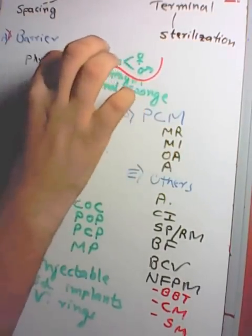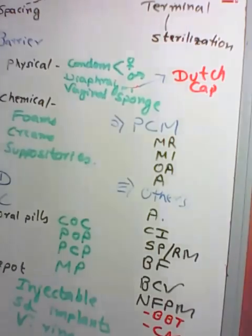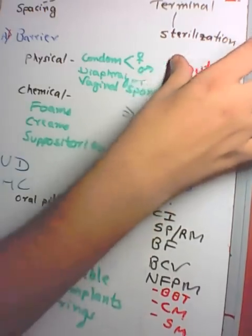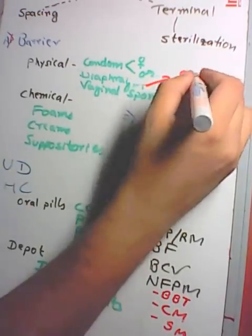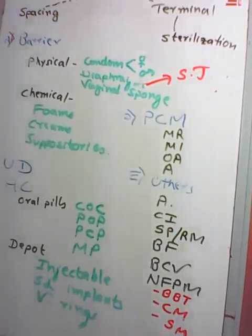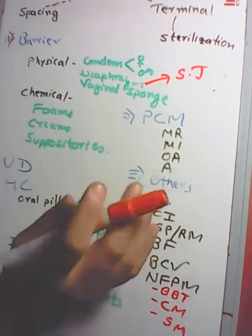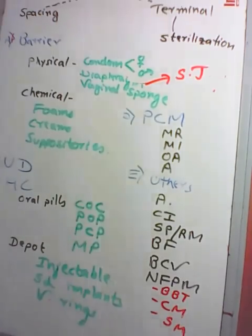Next is diaphragm, also known as Dutch cap. The size is very important as it must fit the vaginal opening. Spermicidal jelly should always be used along with diaphragm. The advantage is absence of risk and medical contraindications; however, it can only be used after the uterus has fully involuted after delivery.